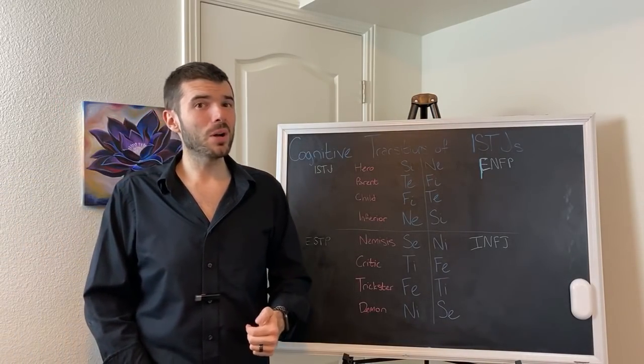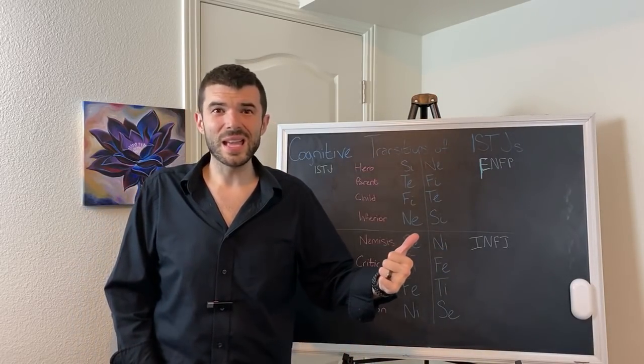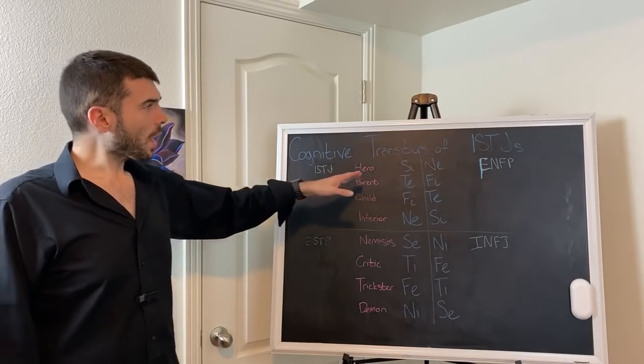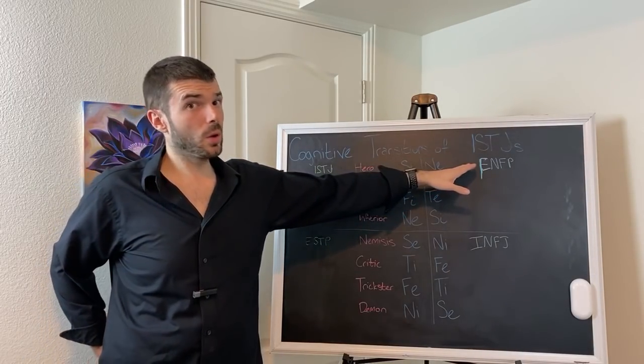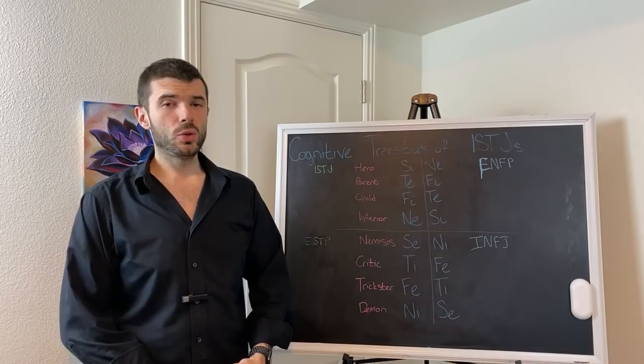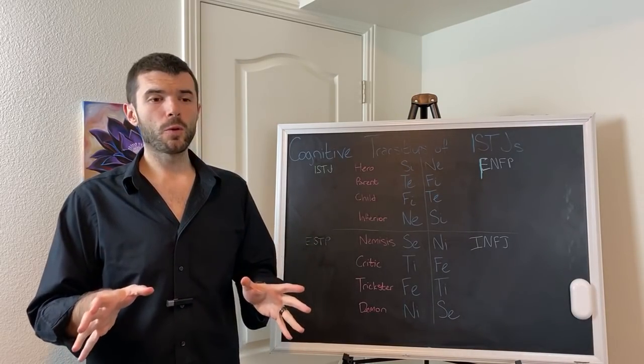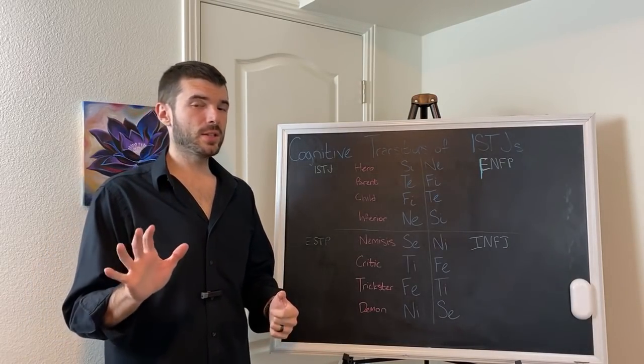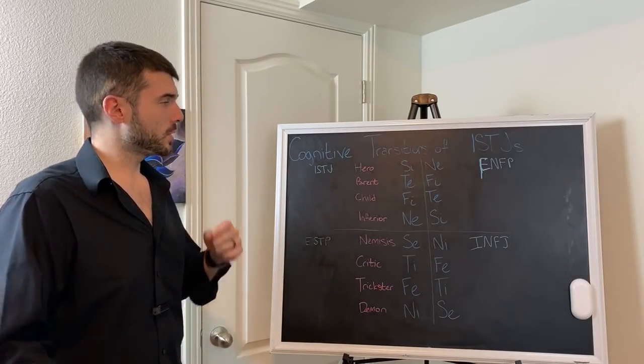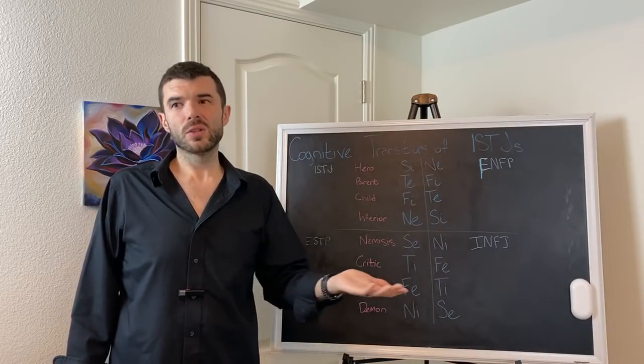The MBTI letter dichotomies are fundamentally flawed. I only use it for SEO. You can get the type grid at csjoseph.life forward slash typegrid. The new one was leaked publicly and we will be making a release to the public after our test is released.